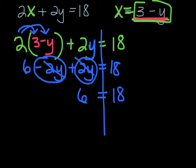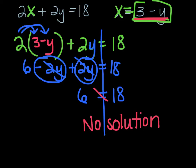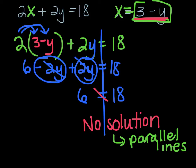I know that 6 does not equal 18, so when you solve a system and get that at the end, it means there is no solution. Those two lines are never going to cross — there's not going to be a point that they share. So you know they are parallel lines. A system of equations can have no solution.